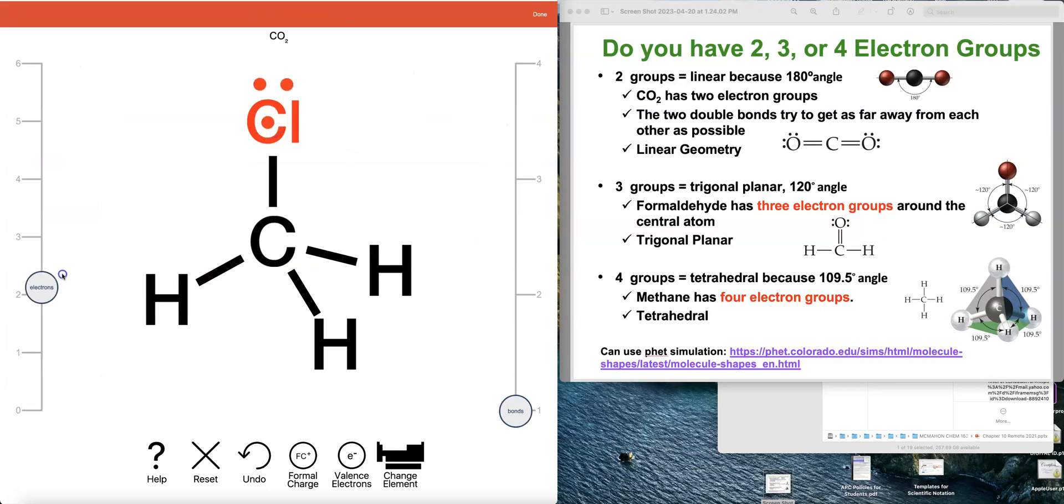So I hope this video helps you understand how to draw Lewis dot structures using the active chemistry website, and also even though you're just doing the Lewis dot structure, how the active program actually helps you see the three-dimensional shape and understand the bond angles with the different geometries. So thanks for watching and I hope this helps.